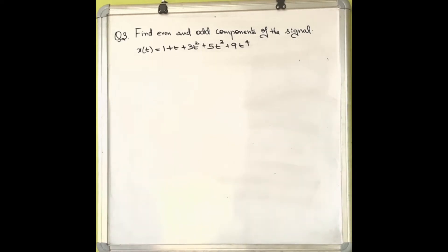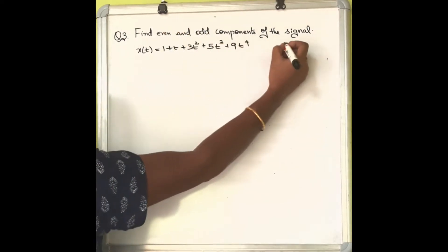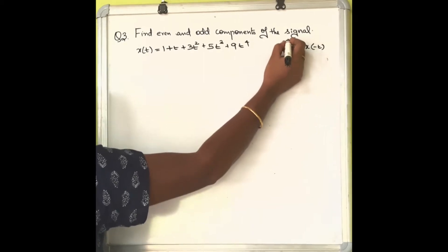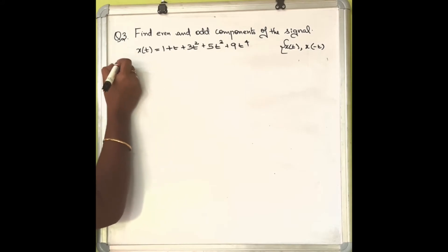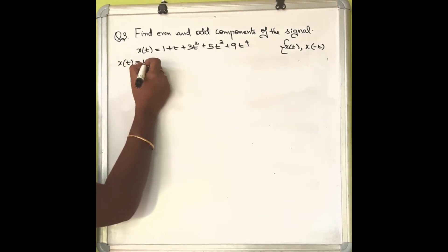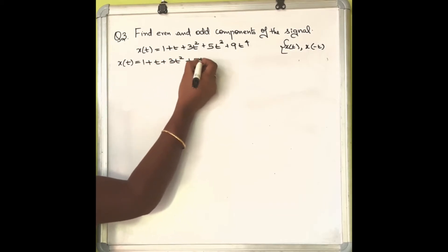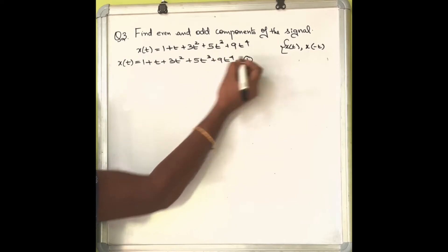Find even and odd components of the signal x(t) = 1 + t + 3t² + 4t³ + 9t⁴. In order to find the even and odd components, we need x(t) and x(-t). So x(t) we have, but we will write it again: 1 + t + 3t² + 5t³ + 9t⁴. This is equation 1.